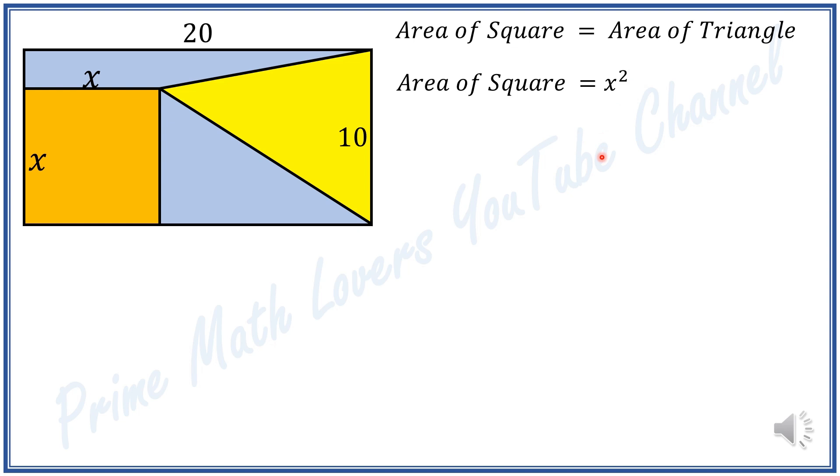For a triangle, area equals half of base times height. This is the height of our triangle. The base of our triangle is 10, so this will be equal to 1 over 2 times 10 times h, or equal to 5h.